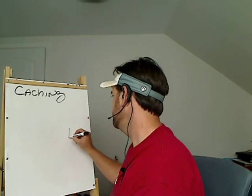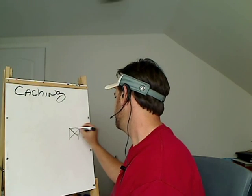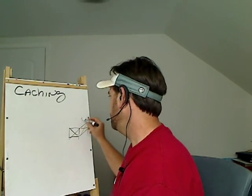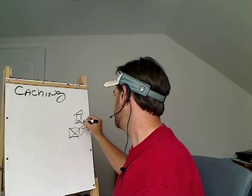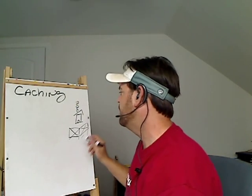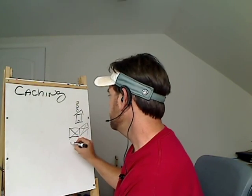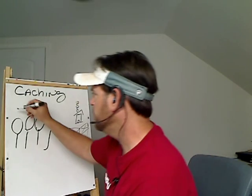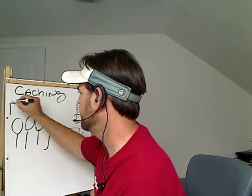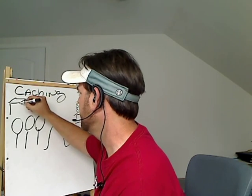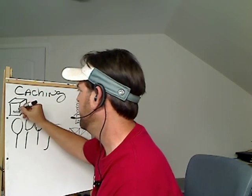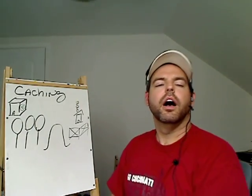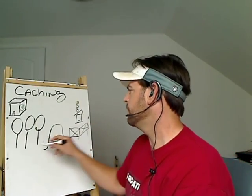So you live on a farm with a cute little house. The problem is you have to go over the hill and through the woods in order to get to the store — let's draw a little big box store here, with a little happy smiley face like you see on TV.